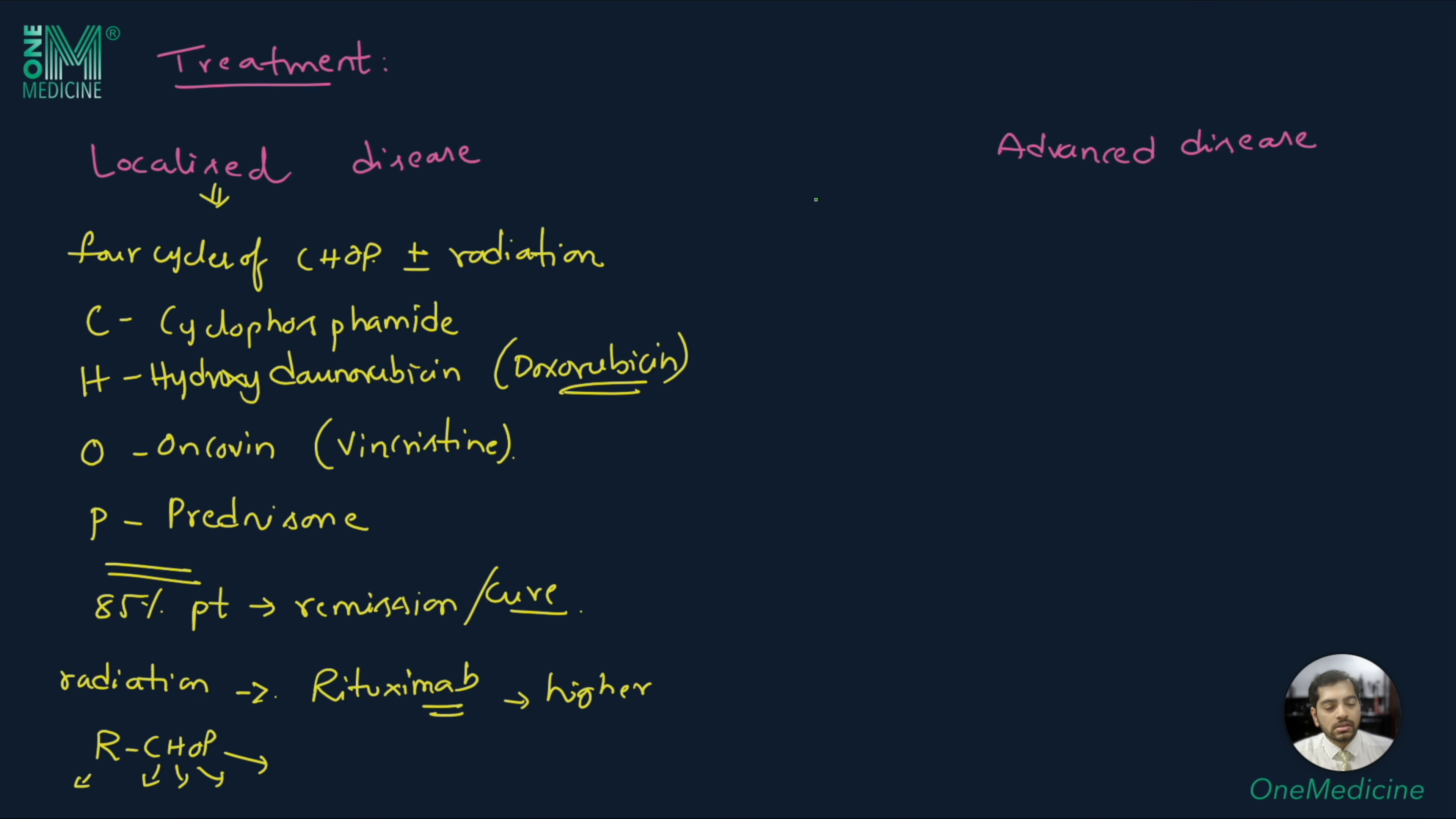For advanced disease, there is a lot of debate regarding the choice of therapy, but the most accepted one is 6 cycles of R-CHOP therapy. This has a cure rate of about two-thirds, that is about 66%.